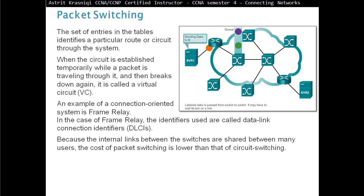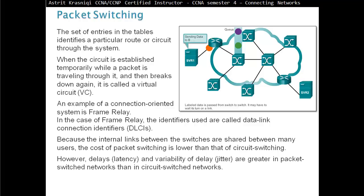Because the internal links between the switches are shared between many users, the cost of packet switching is lower than that of circuit switching. However, delays, latency, and variability of delay jitter are greater in the packet switch network than in the circuit switch network. This is because the links are shared, and packets must be entirely received at one switch before moving to the next switch.